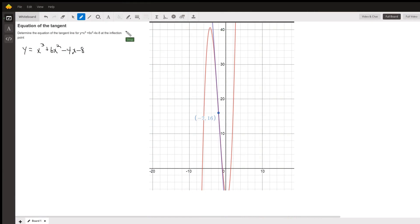Okay, out to the right here we have a picture of a graph that depicts the situation. The red curve is the graph of the function x cubed plus 6x squared minus 4x minus 8. There's the point of inflection negative 2 comma 16 and there's the tangent line to the curve at that point.